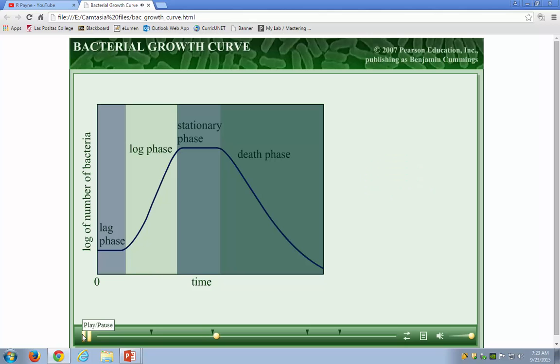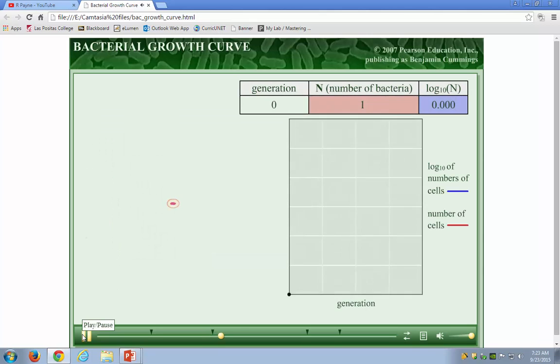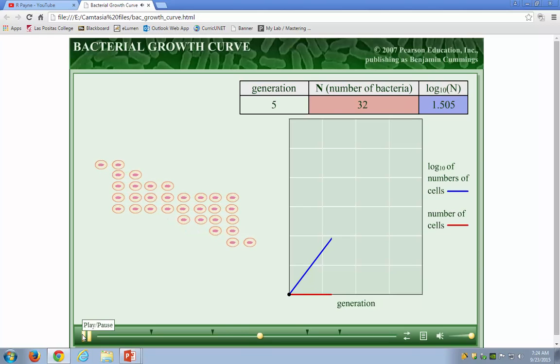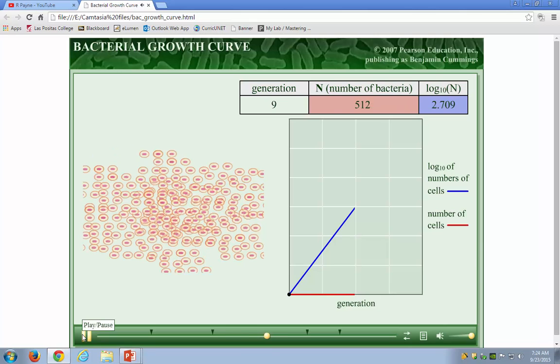During the log phase or exponential growth phase, the bacteria are actively undergoing binary fission. During the log phase, the bacteria double their numbers every generation period. The generation period can range from 20 minutes to days, depending on the species. As long as there are plenty of nutrients and little waste buildup, the bacteria will continue to grow exponentially.